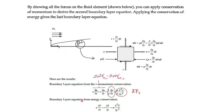Last and certainly not least, we have the boundary layer equation from conservation of energy. The terms u∂T/∂x come from ṁh enthalpy terms. The other term involves α, which is k/(ρc) — so k is in there with a derivative of temperature, coming from conduction energy in the y-direction inside the little element. So without a full derivation, here are the equivalents of the conduction equation for a boundary layer: conservation of mass, x-momentum, and energy.